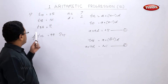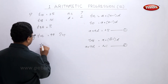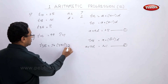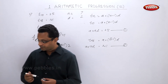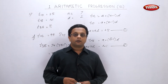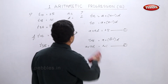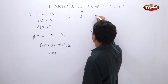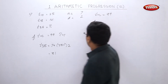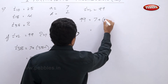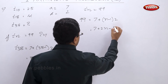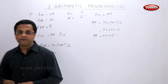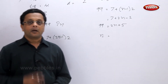Now t38 = 7 + (38−1)×2 = 7 + 37×2 = 7 + 74 = 81. For the third part, tn = 99: 99 = 7 + (n−1)×2, so 7 + 2n − 2 = 99, giving 2n + 5 = 99, and the value of n is 47.